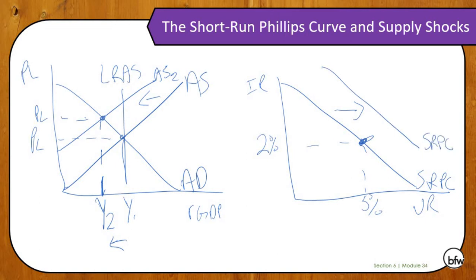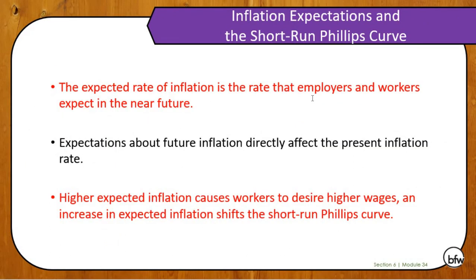For example, let's say that OPEC puts an embargo on oil exports to the United States — that causes short run aggregate supply to shift left. We are now at a higher price level but real GDP also decreased. Let's say that means unemployment is at 8% and inflation jumps up to 4%. That's an example you can draw on the two graphs. Reference this and think about it as we do work with the Phillips curve.